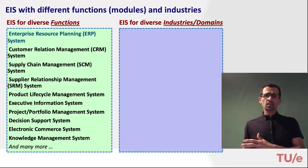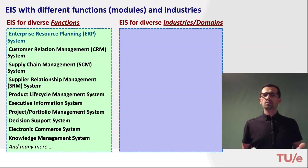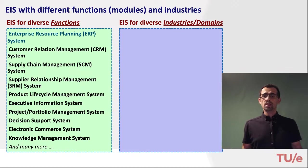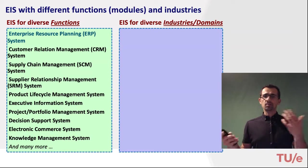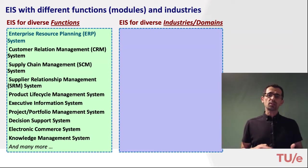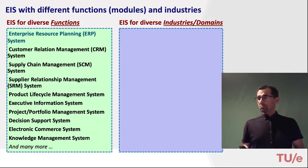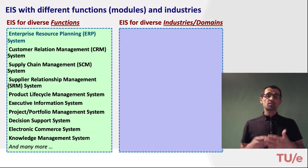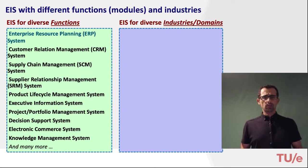On one side we have rather generic enterprise systems that aim to support almost all processes, like ERPs, CRMs (customer relationship management systems), supply chain management systems, project and portfolio management systems, e-commerce systems, knowledge management systems, and many more.